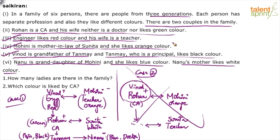All six persons, colors, and most professions are now determined. The only unknown is Sunita's profession — only five professions have been mentioned, so Sunita's profession remains unknown. Tanmay's gender is also undetermined. Everything else — five professions, six colors, six names, five genders — is known.